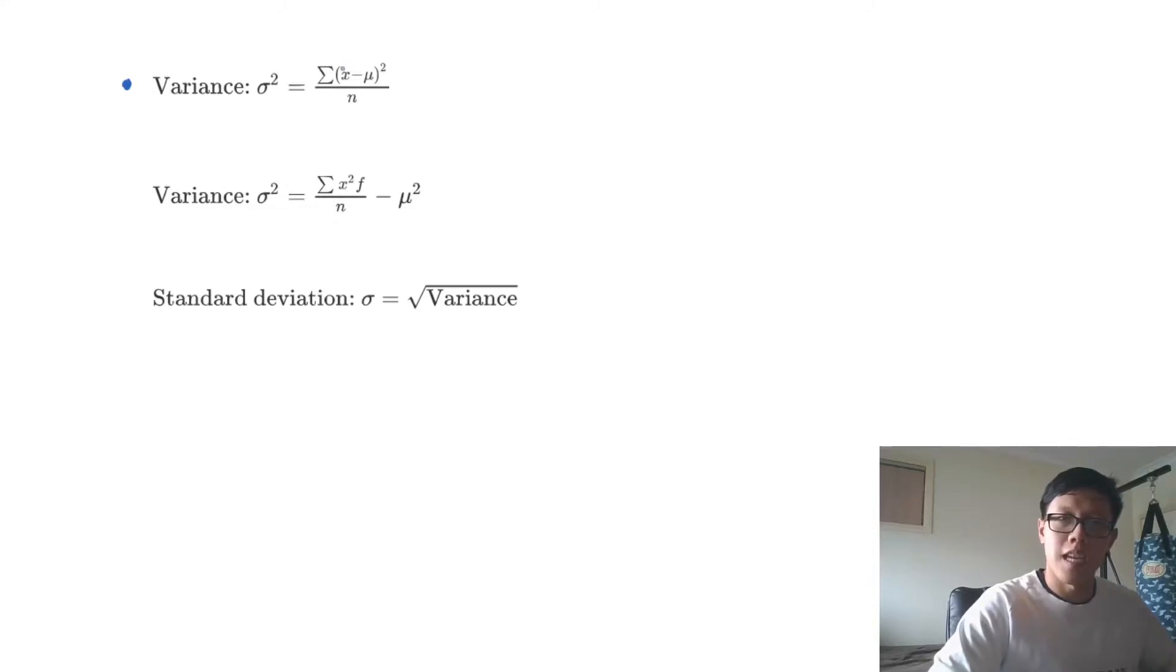So what it's saying is we look at every data point, we look at how far it is away from the mean, we square that, we sum that up for all of the data points and then we divide by the number of data points.